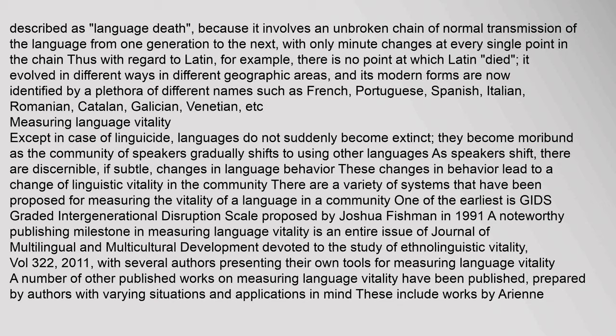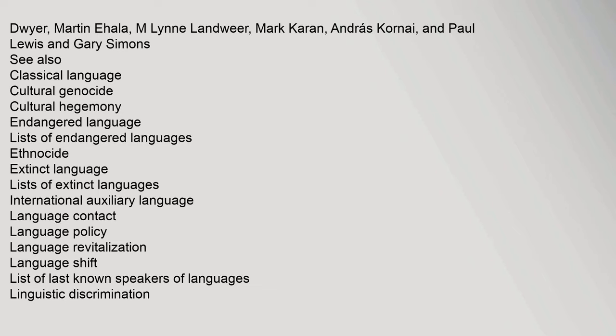Measuring language vitality: except in the case of linguicide, languages do not suddenly become extinct. They become moribund as the community of speakers gradually shifts to using other languages. As speakers shift, there are discernible, if subtle, changes in language behavior, leading to a change of linguistic vitality in the community. There are a variety of systems proposed for measuring the vitality of a language. One of the earliest is GIDS — the Graded Intergenerational Disruption Scale — proposed by Joshua Fishman in 1991. A noteworthy publishing milestone is an entire issue of the Journal of Multilingual and Multicultural Development devoted to ethnolinguistic vitality (Vol. 32/2, 2011). Other published works on measuring language vitality have been prepared by authors including Ariane Dwyer, Martin Ehala, M. Lynn Landwehr, Mark Caron, Andras Kornai, and Paul Lewis and Gary Simons.